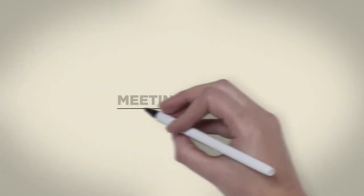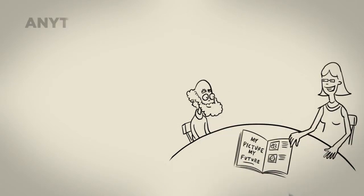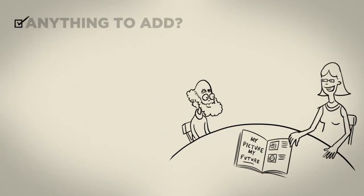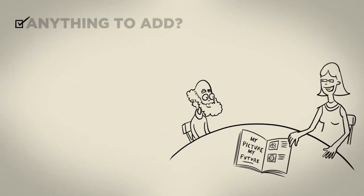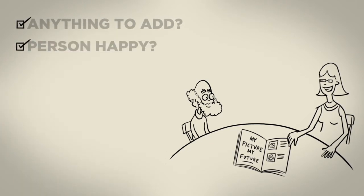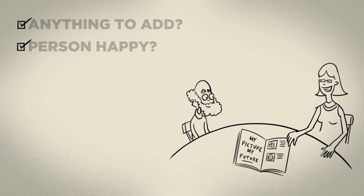Meeting 3: Checking that the person is happy with their Picture My Future resource. Ask if there is anything the person would like to add since the previous meeting. Check that the person is happy with their Picture My Future resource and the things that it shows about them and their future.